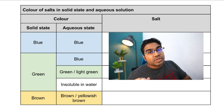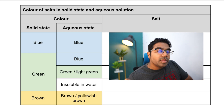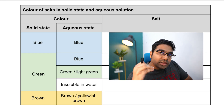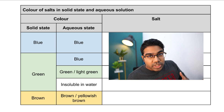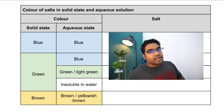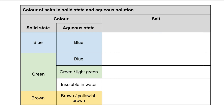Let's look at what happens if the salt is in a solid state. If the color of the salt in solid state is blue and it dissolves to form a blue solution, then there are two possible salts: copper(II) nitrate, Cu(NO3)2, and copper(II) sulfate. Copper(II) sulfate is probably the most common chemical you come across in secondary school.